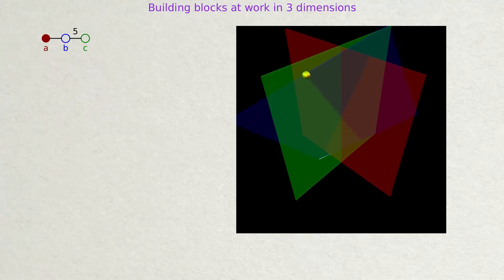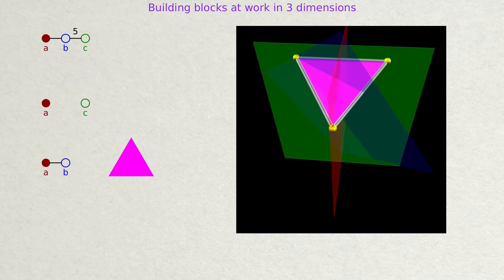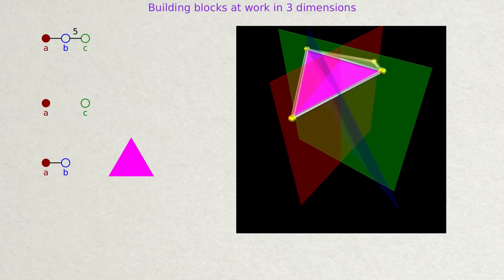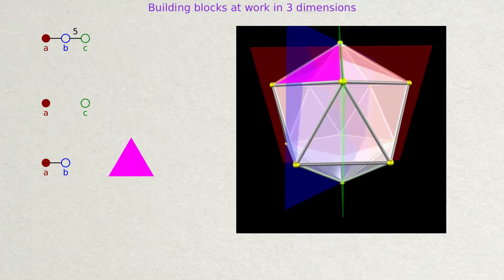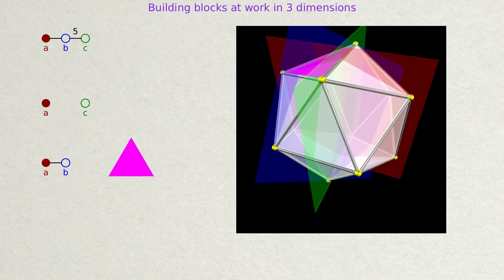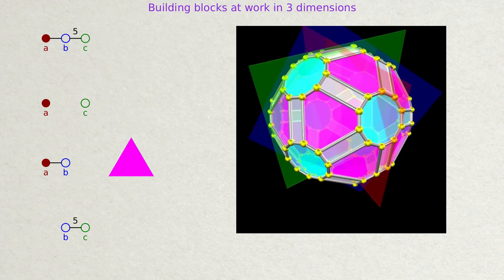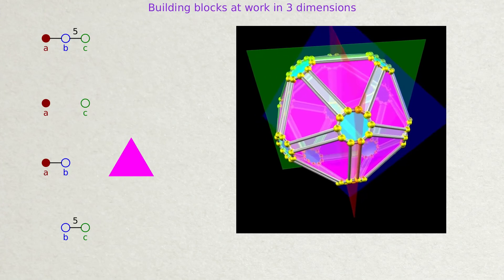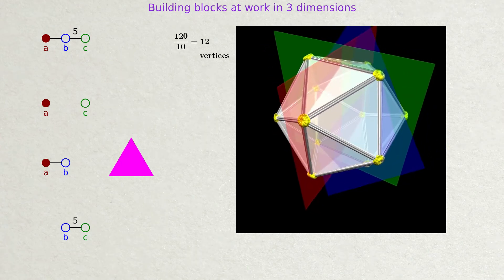We go back to the Coxeter group H3 of the truncated icosidodecahedron. This time the source point is located at the intersection of the blue and the green plane. Only the red and the blue plane generate a face — in this case a triangle — as we've learned from the two-dimensional mirror lines. The combination of the red and the green plane only creates an edge, because the green plane is inactive. The five-fold rotational symmetry of the blue and the green plane is the reason why five triangles meet at one vertex. This icosahedron can be obtained from the full truncated icosidodecahedron by shrinking each of its decagons to one vertex. We are left with 1 over 10 of all vertices. Each vertex belongs to five triangles, therefore the total number of triangles is given by 20.